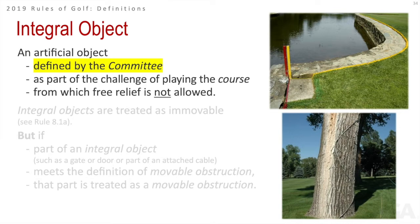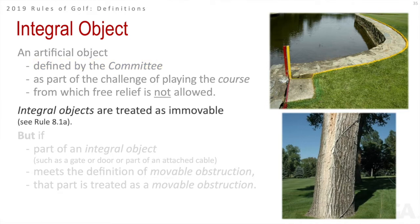An integral object is an artificial object defined by the committee as part of the challenge of playing the golf course, so they don't give the golfer free relief from these things. Examples include a stone wall inside a penalty area or a wire running up a tree — the committee would put this in writing, so golfers would know if there's an integral object on the course. They're treated as immovable.